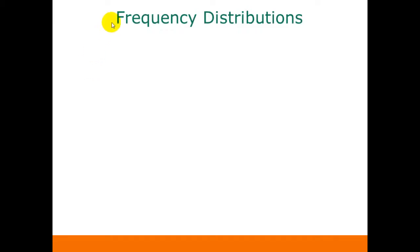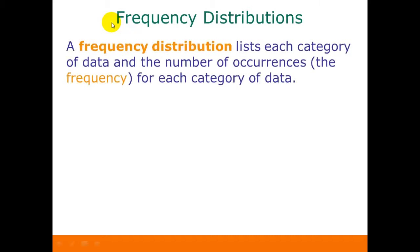When we talk about a table in statistics, we're usually talking about what we call a frequency distribution. A frequency distribution lists each category of data and the number of occurrences — in other words, the frequency — for each category of data.